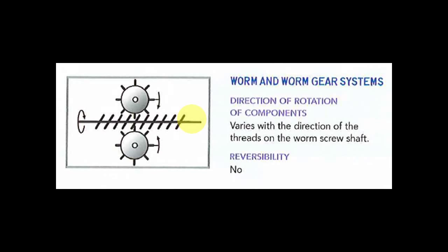Worm and worm gear system. Now, this one is not reversible. Can you tell me why it's not reversible? If you look at the image, why is this not reversible? It's because these teeth are at an angle. There is not much leeway for you to go backwards. It can only go forward.